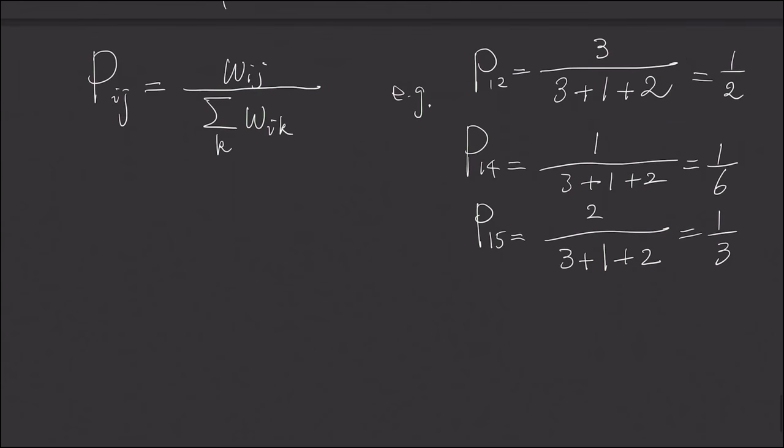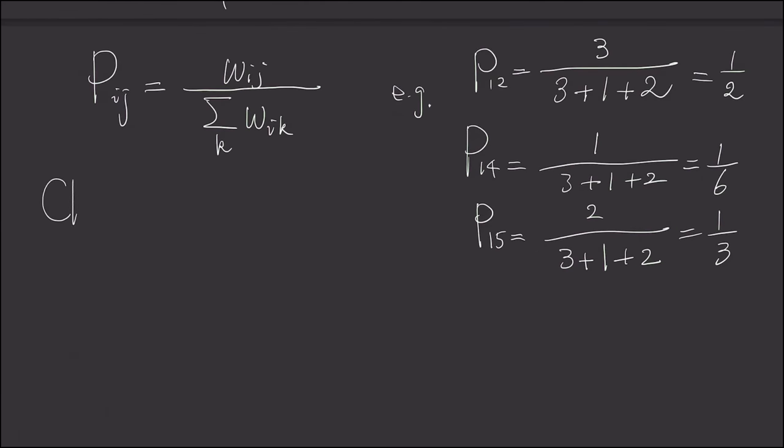So we have 50% of chance of moving from node number 1 to node number 2 if we are currently at node number 1. And we have this is 1 sixth chance, and we have 1 third chance going from node number 1 to node number 5. And now we are going to make the claim. This Markov chain, given this transition probability, it's not like the flea problem where we assign arbitrary two numbers, but this probability is proportional to the edge's strength. And we claim this Markov chain is time reversible.